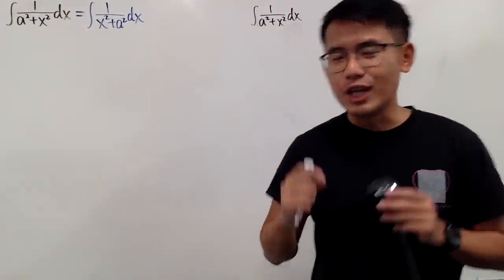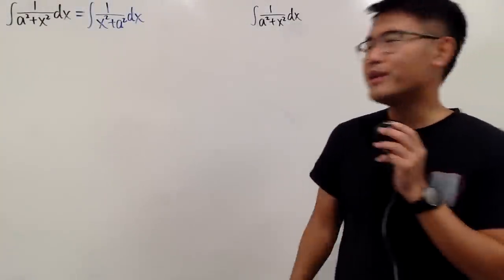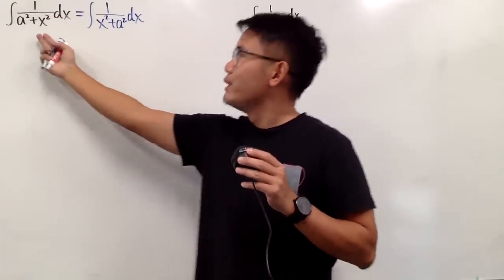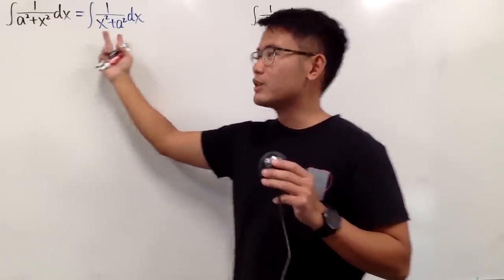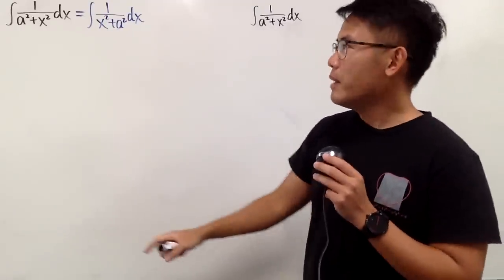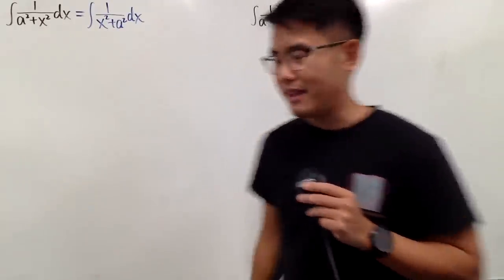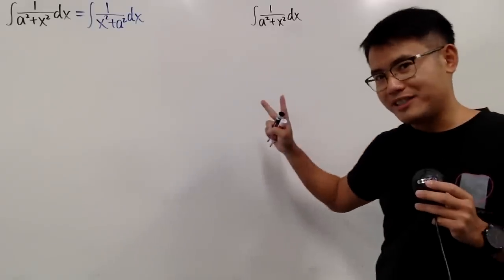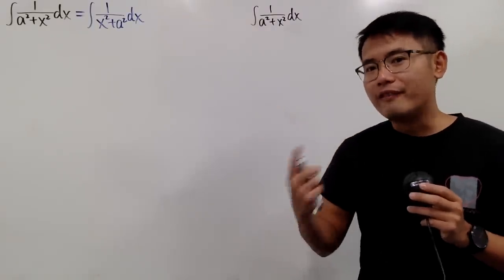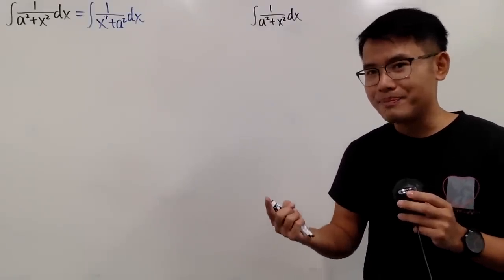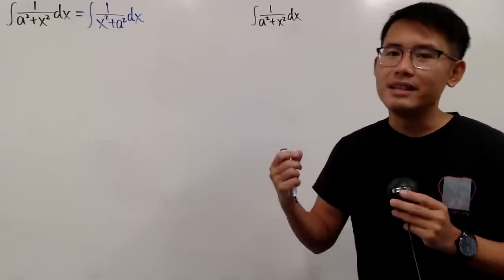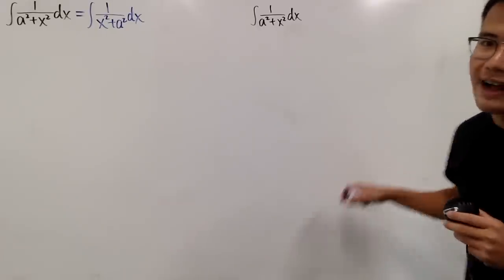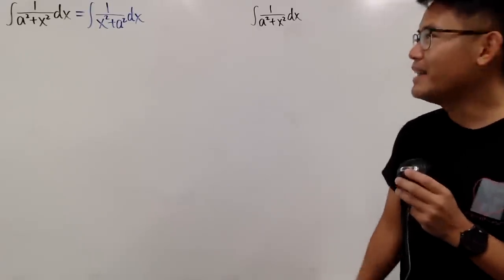In this video, I'll show you how to come up with the formula for the integral of 1 over x squared plus a squared. Because you're just adding these two things, you can switch the order as well. In this video, I'll show you two ways to come up with the formula. The first way is to do trig sub, and we don't have to use the fact that the derivative of inverse tangent. For the second one, I will use that fact along with u-sub.